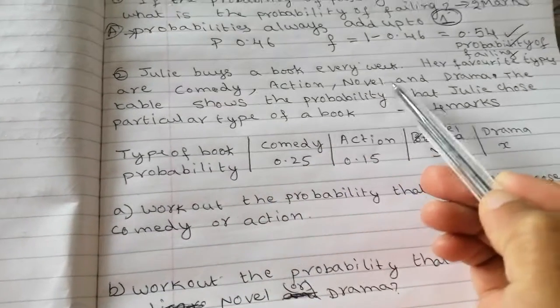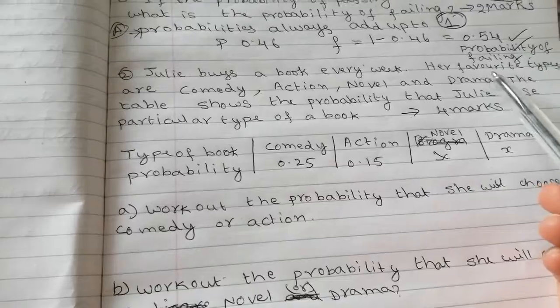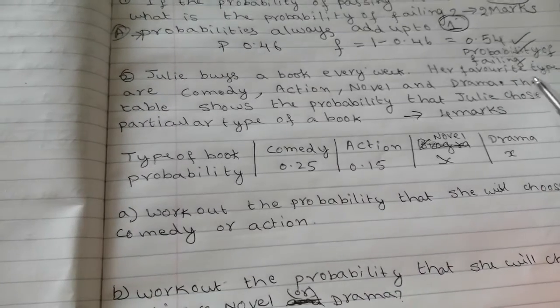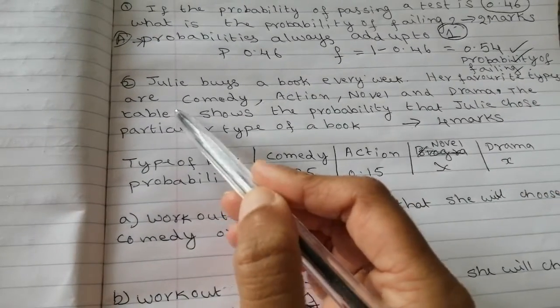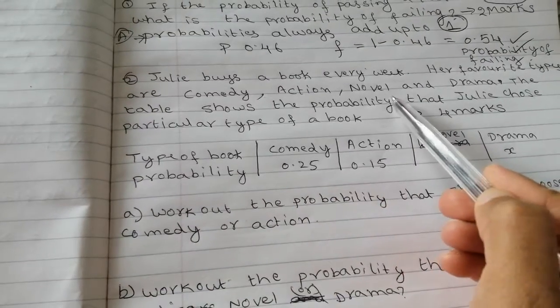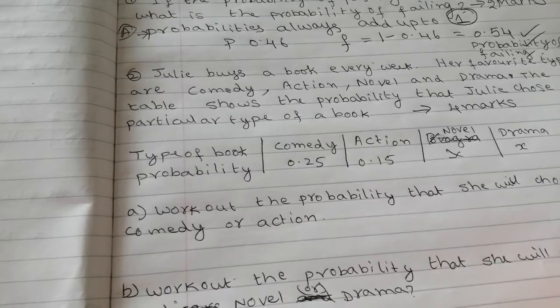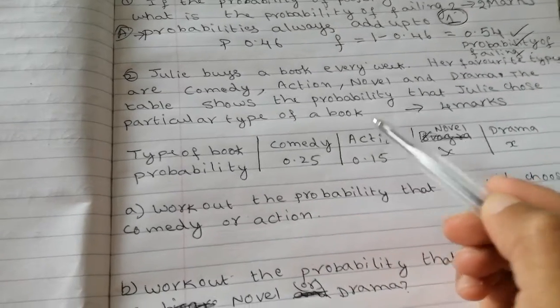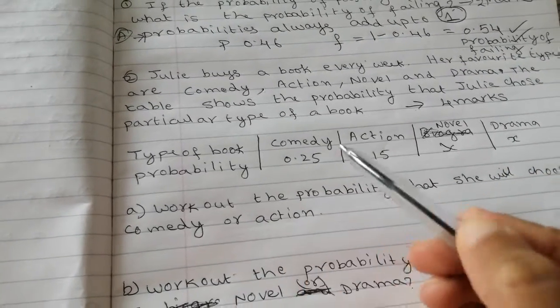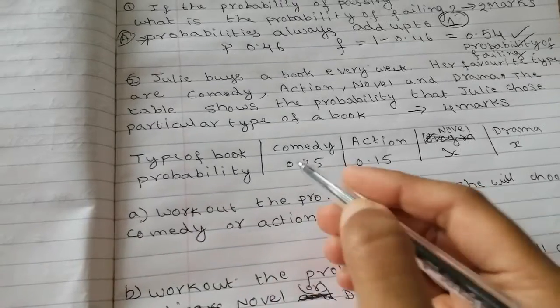Julie buys a book every week. Her favourite types are comedy, action, novel and drama. The table shows the probability that Julie chose particular type of book. Type of book, probability. They are given this table.